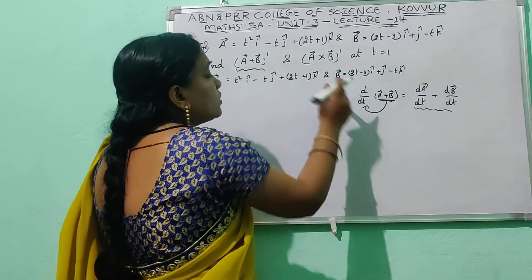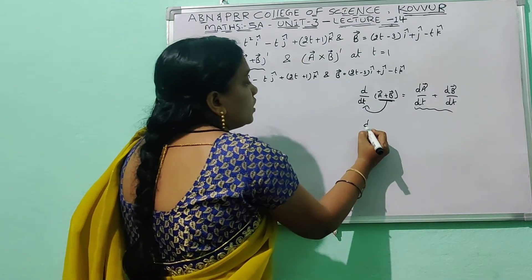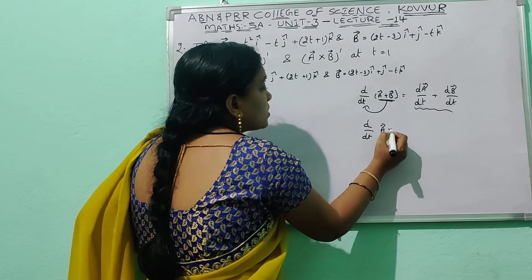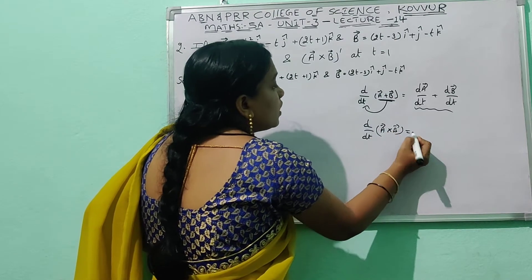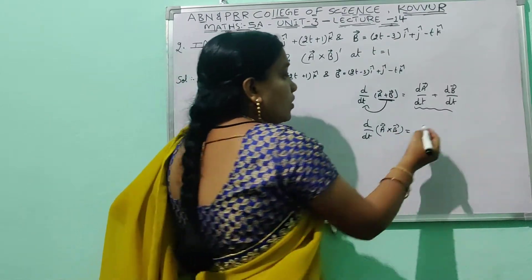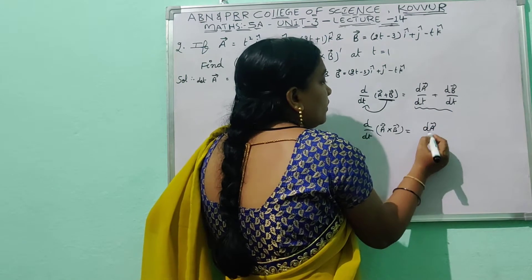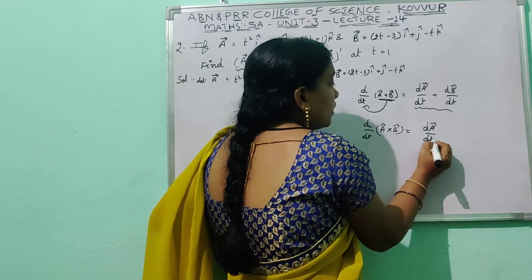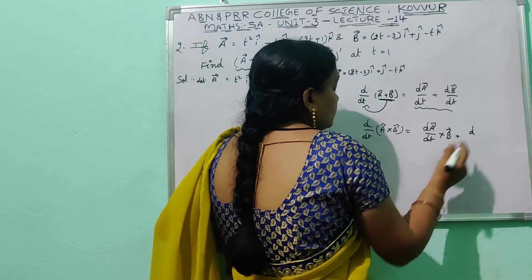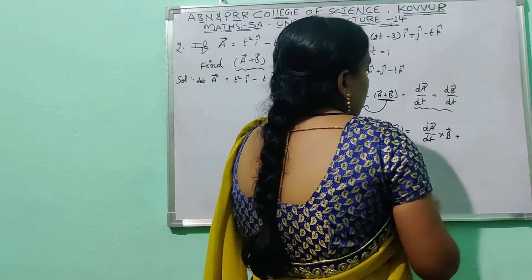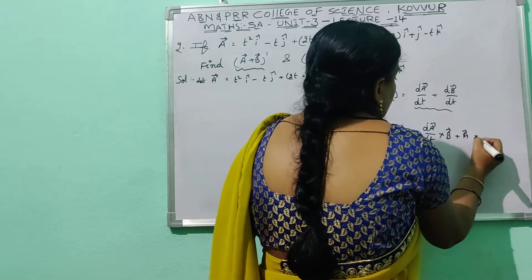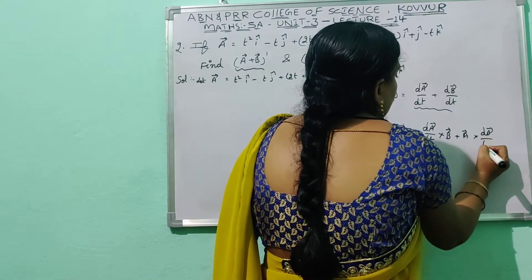Next, for ā × b̄, the derivative of d/dt(ā × b̄) uses the property formula: dā/dt × b̄ + ā × db̄/dt.